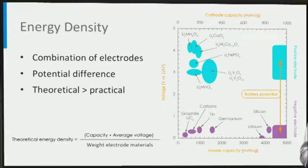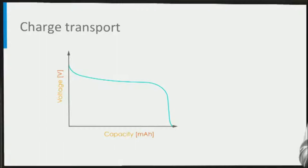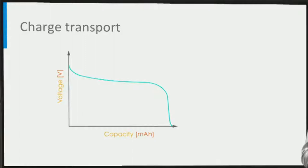Next, let's have a look at what determines the internal resistance and power density of batteries, which determines for instance the charging time. As a result of the battery internal resistance, the battery voltage increases with charge current and decreases with discharge current, as we have seen in the previous lecture. As a consequence, the energy efficiency reduces with increasing current, and more heat is produced in the battery.